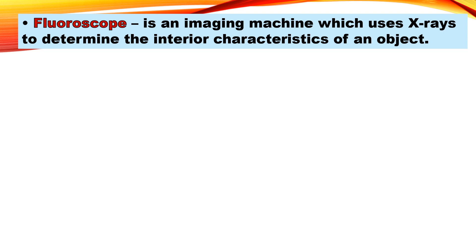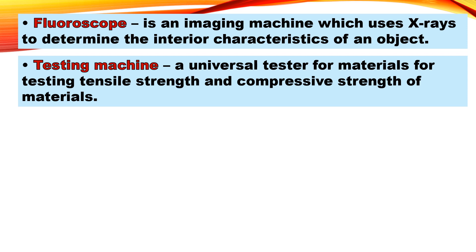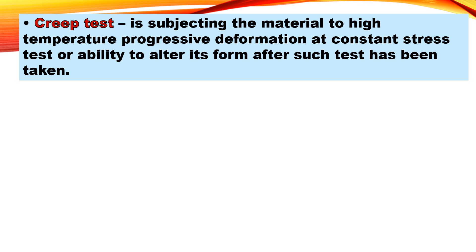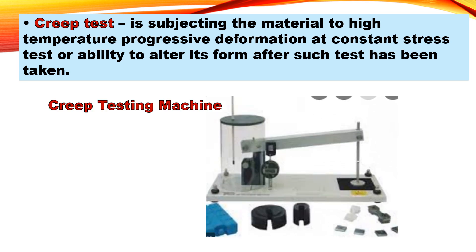Next is the fluoroscope — an imaging machine which uses x-rays to determine the interior characteristics of an object. Then the universal testing machine, used for testing tensile strength and compressive strength of materials; shown here is a universal automatic tensile testing machine. Next is the creep test, which subjects the material to high temperature and progressive deformation at constant stress, testing its ability to alter its form after the test has been applied. An example of a creep testing machine is also shown.